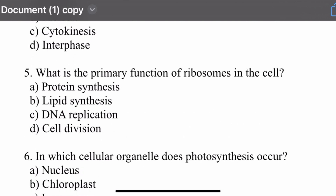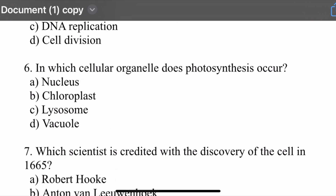Question number five: What is the primary function of ribosomes in the cell? Options are: protein synthesis, lipid synthesis, DNA replication, and cell division. The right option is protein synthesis. The primary function of ribosomes in the cell is protein synthesis.